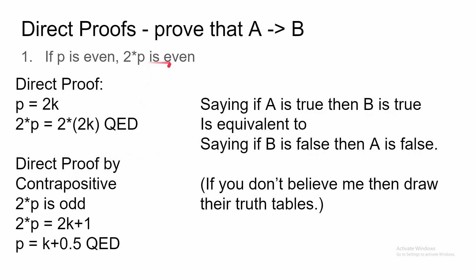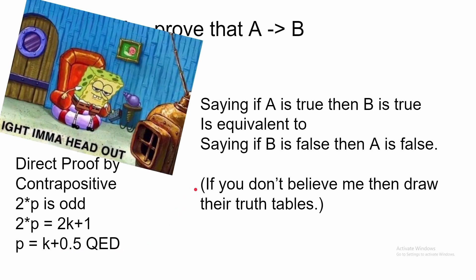So we assume 2 times P is not even, therefore it's odd. And 2 times P is odd, therefore 2 times P can be written as 2K plus 1. If we divide 2 from both sides, we find that P cannot be even either. So QED, we have proven it. And QED basically means we're done.